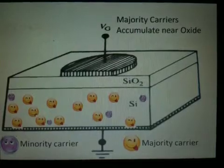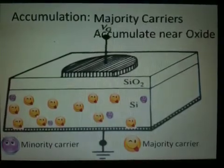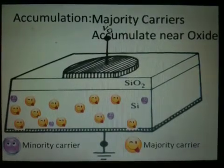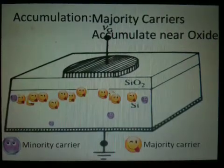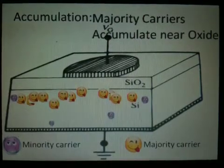In accumulation, majority carriers will accumulate near the oxide. As you can see, the majority carrier is a yellow happy face, and the minority carrier is a purple happy face. This demonstration shows how majority carriers accumulate near the oxide interface in accumulation.